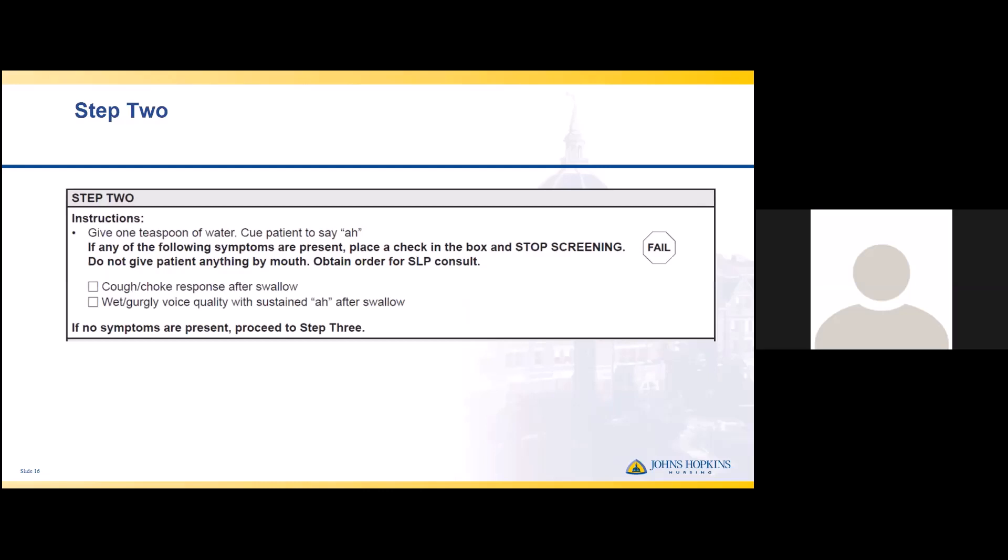For step two, give the patient a teaspoon of water and cue them to say 'ah' afterwards. Observe whether the patient has a cough or choke response following the swallow, or whether saying 'ah' produces a wet, gurgly voice quality. If either of these are true, stop the screen, make the patient NPO, and get SLP involved.